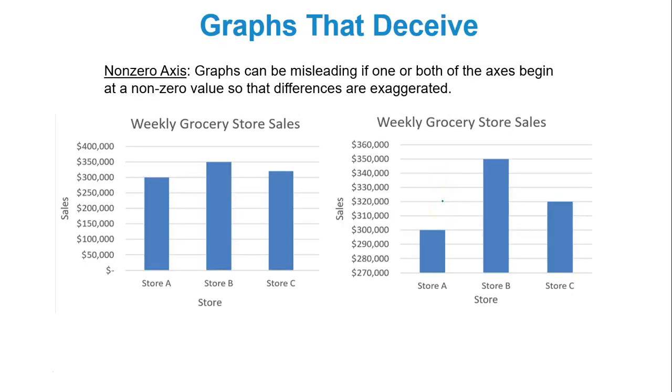And I also want to just give you a little bit of a fair warning here about graphs that deceive. Graphs can be misleading if one or both of the axes begin at non-zero values so that differences are exaggerated. For instance on my graph on the left I have weekly grocery store sales. I start my scaling on the y-axis at zero and then I increment by $50,000 all the way till I get to $400,000. So if I look store A, store B, store C, it looks like they relatively have the same sales. They're pretty close to one another. They're within $50,000 of each other. That's the range.